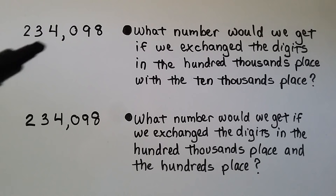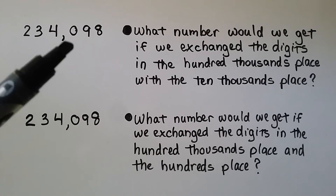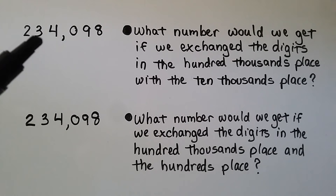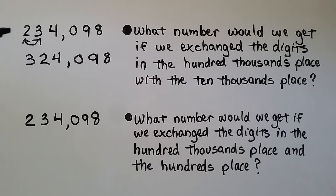Now take a look at this number. What number would we get if we exchanged the digits in the hundred thousands place with the ten thousands place? We identify where those place values are by starting on the right: ones, tens, hundreds, one thousands, ten thousands, hundred thousands. So we're going to exchange the two and the three — they swap places. We had two hundred thirty-four thousand ninety-eight, and now we have three hundred twenty-four thousand ninety-eight.